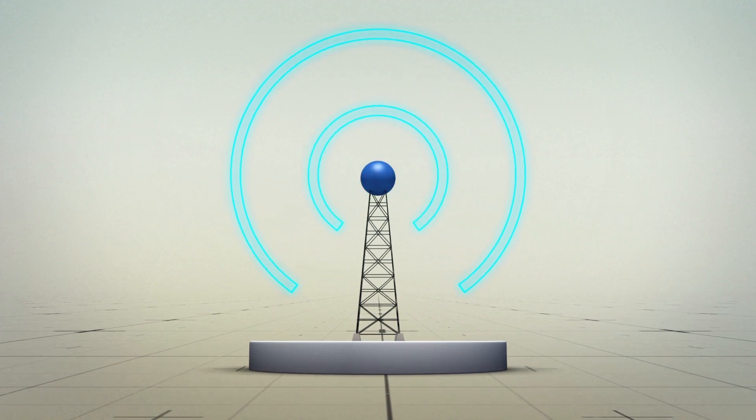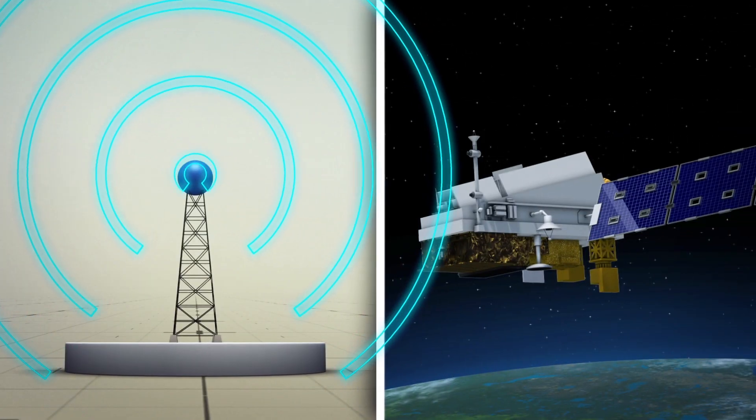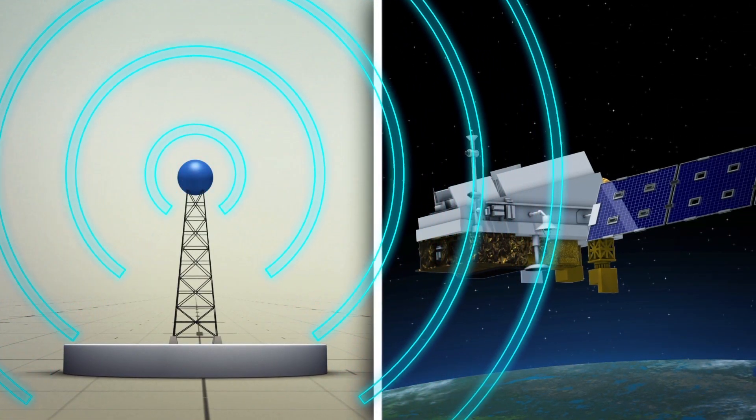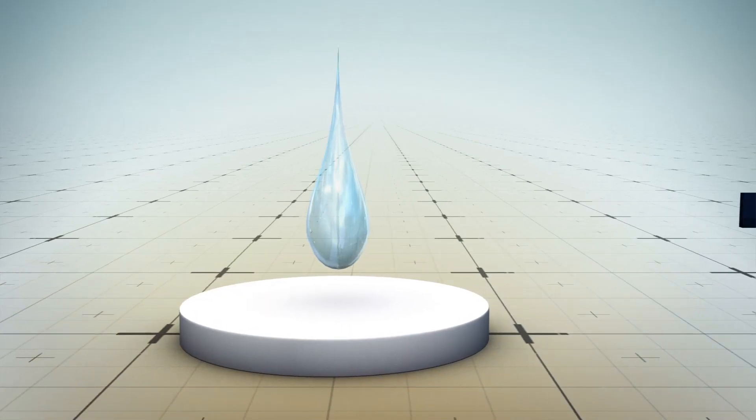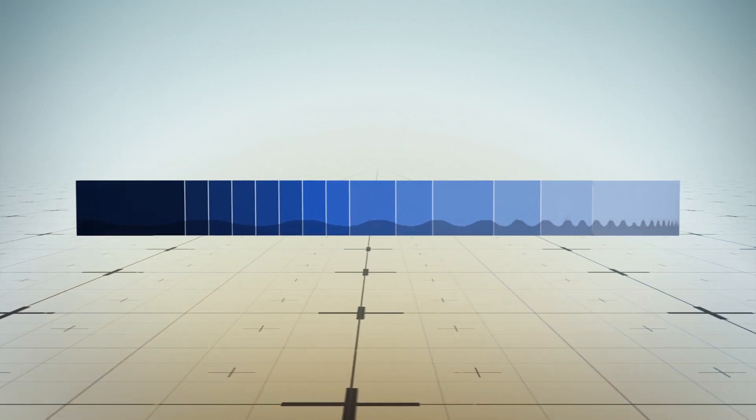However, meteorologists are worried as 5G networks use wireless radio frequencies that could interfere with data collection. This is because water vapor is measured at the 23.8 GHz frequency, which is when it gives off a faint signal in the atmosphere.